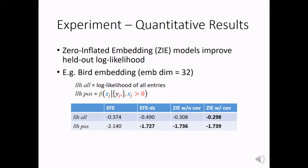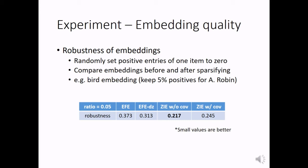Then, we investigate the embedding quality of our embedding models. Especially, we show that the embedding vectors obtained by our embedding models are more robust to data sparsity. In this experiment, we randomly set positive entries of one item to zero. And then, we compare the embedding vectors before and after this data sparsity procedure.